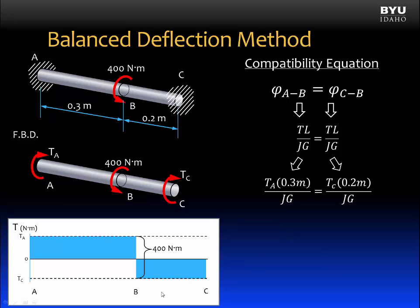In the second term, the internal torque is T sub C. The length over which it's applied is 0.2 meters. Notice I'm not worrying about the sign because in our compatibility equation, we have just set the magnitudes of the angles of twist equal to each other. We see from the diagram that they'll be in opposite directions. Now we can solve for T sub A and that is equal to 2 thirds T sub C.